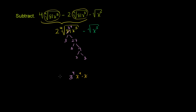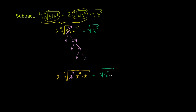Taking the 4th root of all of this is the same thing as taking the 4th root of each factor separately. Of course, I have a 2 out front. And then x to the 3rd can be written as x squared times x, so it's minus the principal square root of x squared times x. I broke it up like this because x squared is a perfect square. This is the same thing as the 4th root of 3 to the 4th, times the 4th root of x to the 4th, times the 4th root of x.